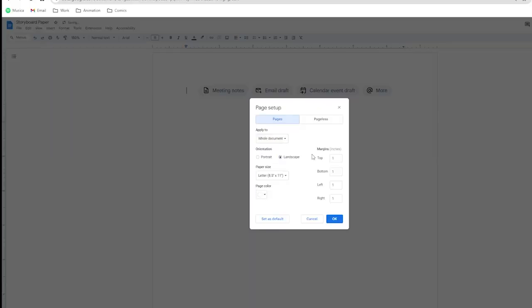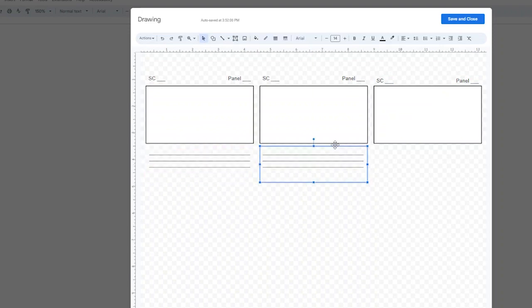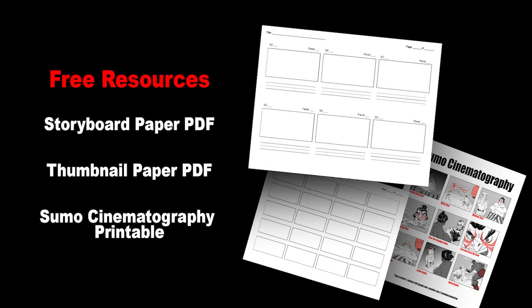Speaking of storyboard paper, it's so easy to just open up a Google Docs document and drag some boxes and make some lines and include an indication for your title and page number and panels. That's super easy. Or just find something online. Make sure to check the link in the description below and download PDFs for the storyboard paper.